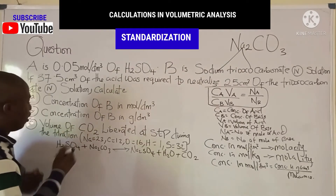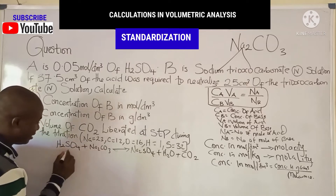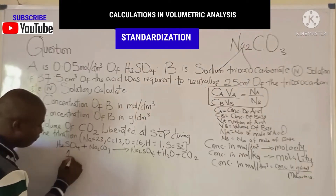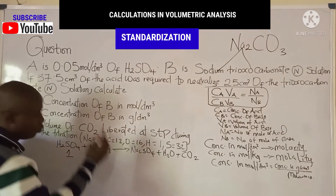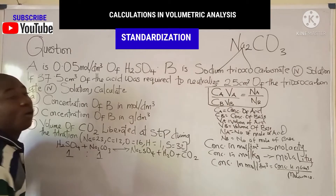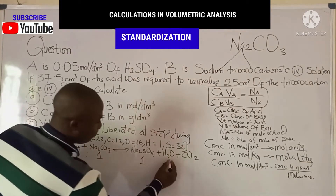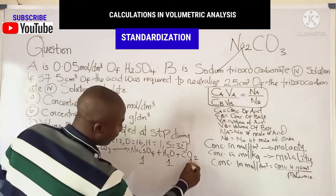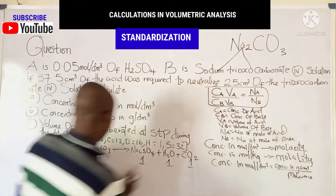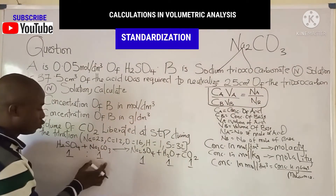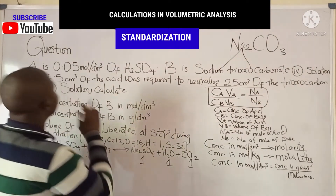The number of moles of acid is 1 and the number of moles of base is also 1 — the ratio is 1:1, so na and nb are both 1. The reaction is balanced, so na over nb equals 1 over 1.